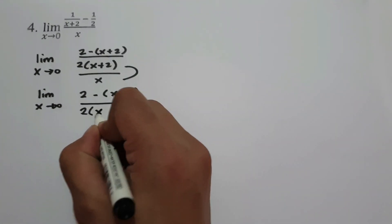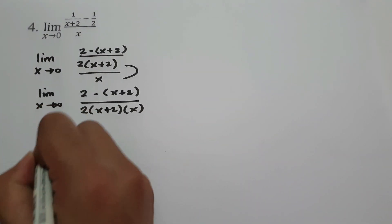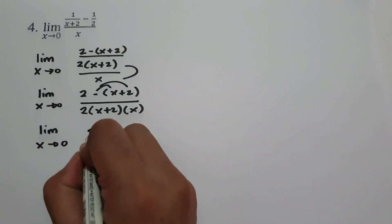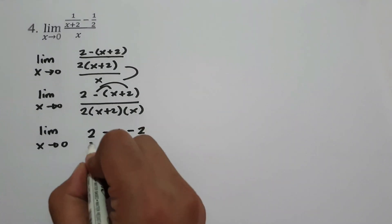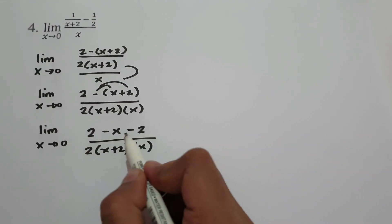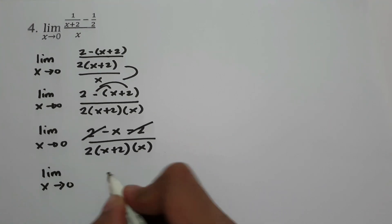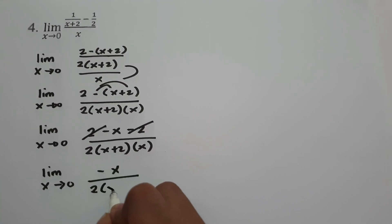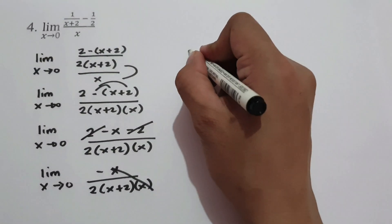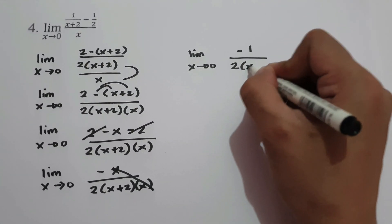So let's have 2 times x plus 2 multiplied by x in the denominator. And then to simplify, let's have the limit as x approaches 0. Let us distribute the negative sign inside the parenthesis, and let's have 2 minus x minus 2, all over 2 times x plus 2 times x. Since 2 minus 2 equals 0, we cancel those terms. And we have the limit as x approaches 0 of negative x over 2 times x plus 2 multiplied by x. So let us cancel x.